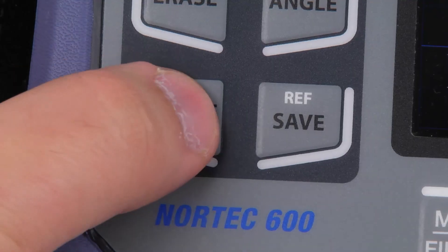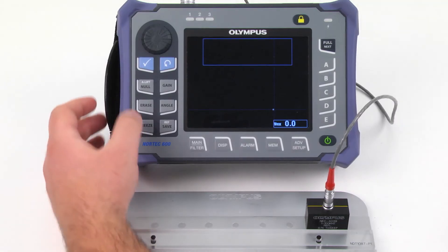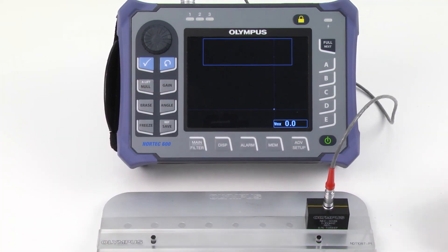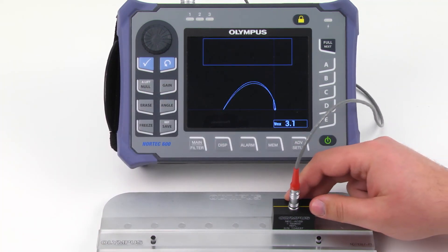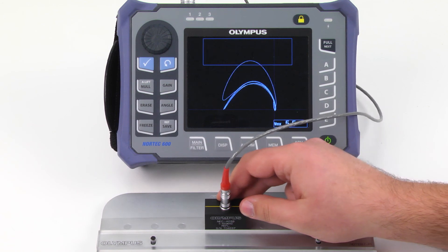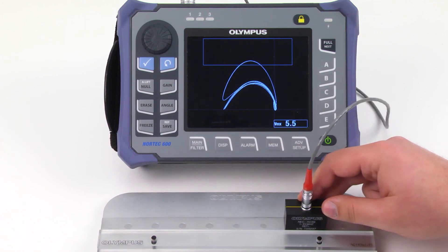Press Freeze and Fold Next. Place the probe on a defect-free area and press NULL. Scan the standard. If desired, adjust the alarm box for better separation between damaged and undamaged fastener signals.